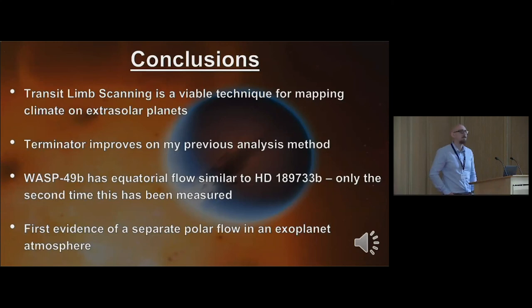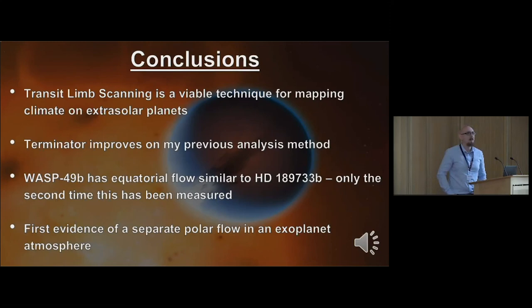Question (Eric, University of Hawaii): For WASP-49b, do we actually expect equatorial flow to continue up to the level where we see these extended atmospheres? I'm a little surprised. Response: The flow structure does appear to be preserved at that level - that's what I've detected. But honestly, I have the same question myself. For this level in the atmosphere, I'm not actually sure what is theoretically expected.